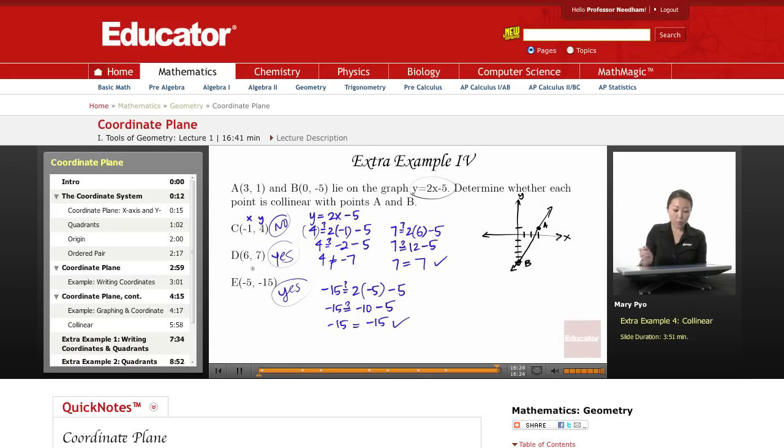So points D and E are collinear with points A and B since they all fall, or they're all on the line y equals 2x minus 5.